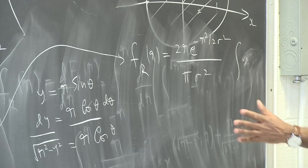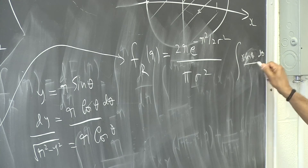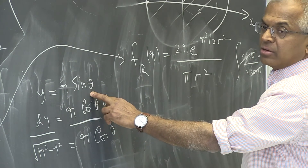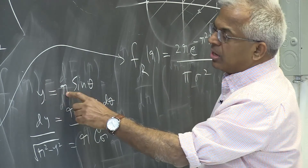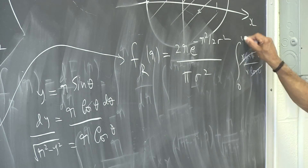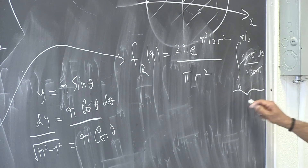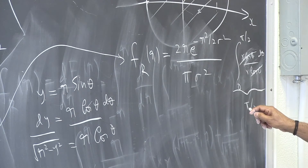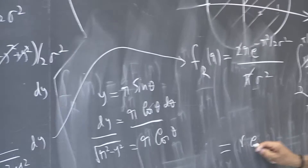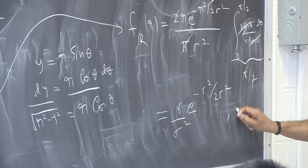With y = r·sin(θ), dy = r·cos(θ)dθ and √(r²−y²) = r·cos(θ), so dy/√(r²−y²) = dθ. The limits transform: when y=0, θ=0; when y=r, sin(θ)=1 so θ=π/2. The integral becomes integral from 0 to π/2 of dθ = π/2. Therefore f_r(r) = [2r · exp(−r²/(2σ²)) / (πσ²)] · (π/2) = r · exp(−r²/(2σ²)) / σ², for r ≥ 0.